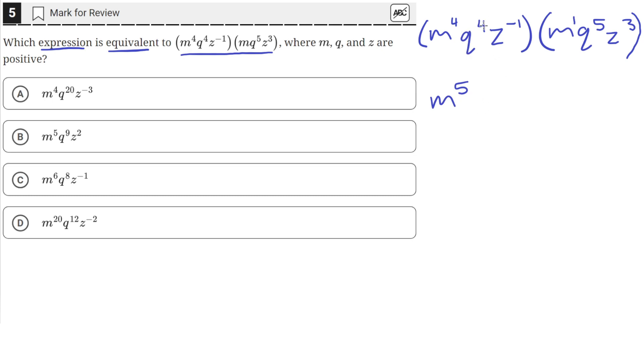And then we have q to the fourth and q to the fifth. They have the same base, so we'll keep the base and add the exponents. 4 plus 5 is 9.